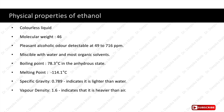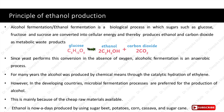Let us discuss the principle of ethanol production. Alcohol fermentation or ethanol fermentation is a biological process in which sugars such as glucose, fructose and sucrose are converted into cellular energy, thereby producing ethanol and carbon dioxide as metabolic waste products. Since yeast performs this conversion in the absence of oxygen, alcoholic fermentation is an anaerobic process.